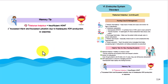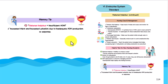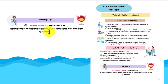Memory chip: diabetes insipidus is insufficient ADH. Remember that D stands for diabetes in case you mix it up with other terminology — ADH stands for diabetes. Increased thirst and increased urination are due to inadequate ADH production or response.